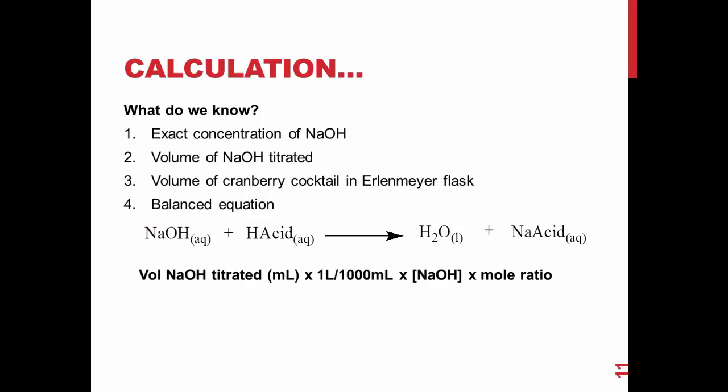You can calculate the moles of hydrogen ion in the cranberry cocktail solution by multiplying the volume of sodium hydroxide in liters by the concentration of sodium hydroxide, then multiplying by the molar ratio in the balanced equation, which is 1 to 1.